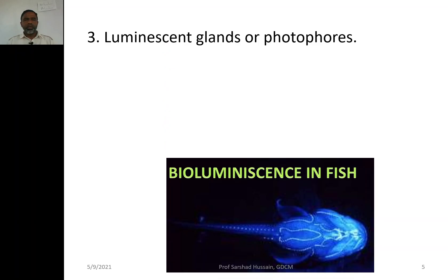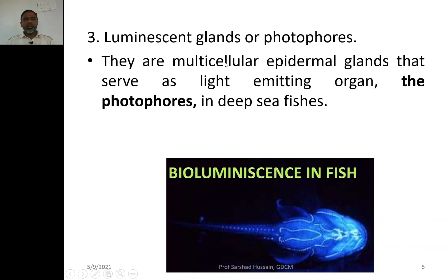The third type is luminescent glands, also called photophores. Luminescent glands are multicellular epidermal glands — produced from the epidermis. They serve the purpose of light emission. For example, in the deep dark sea, certain fish produce light using these organs. The organs producing light are basically the luminescent glands or photophores.